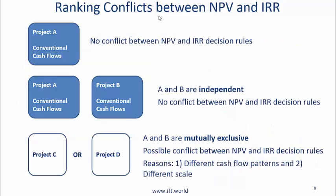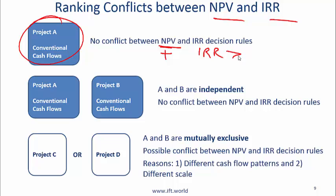Speaking of conflicts between NPV and IRR: if you just have one project and are deciding whether to do it or not, NPV and IRR will always tell you the same thing — there will be no conflict. If the NPV is positive, then automatically the IRR will be greater than the cost of capital. For independent projects with conventional cash flows, generally there will be no conflict between NPV and IRR.